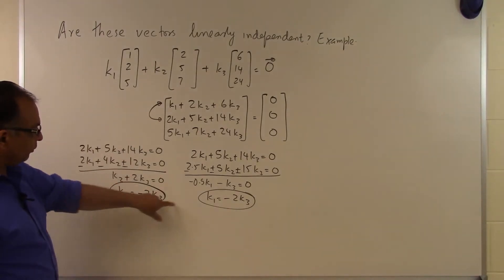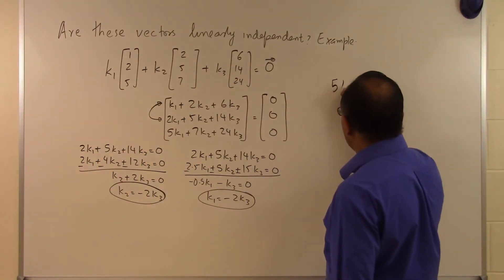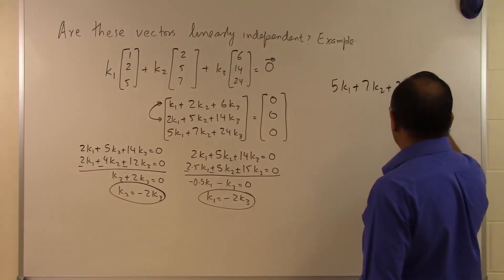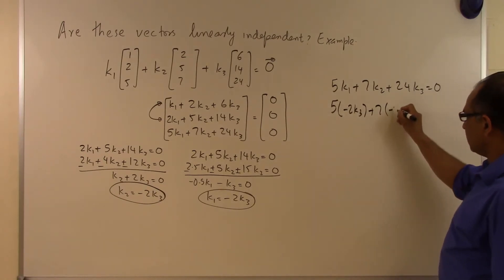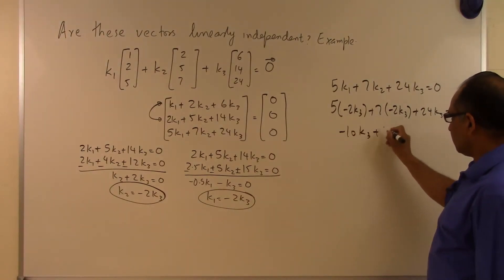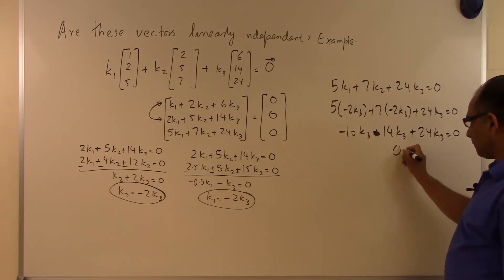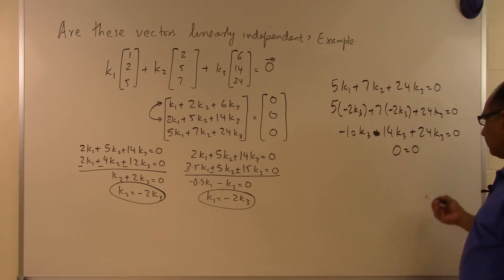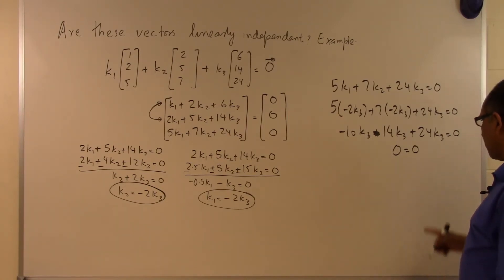Now substituting into the third equation: 5K1 + 7K2 + 24K3 = 0. Substituting K1 = -2K3 and K2 = -2K3 gives 5(-2K3) + 7(-2K3) + 24K3 = -10K3 - 14K3 + 24K3 = 0. We get 0 = 0, meaning the third equation provides no additional information. This means we can choose any value for K3.